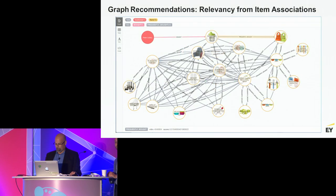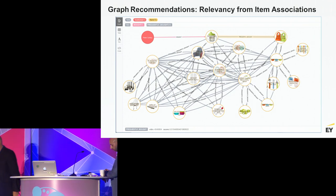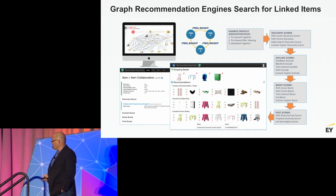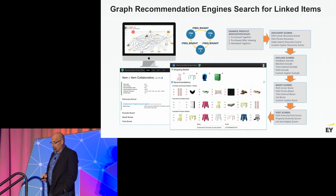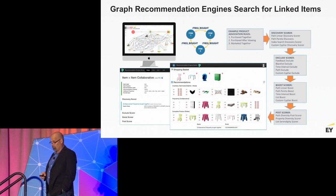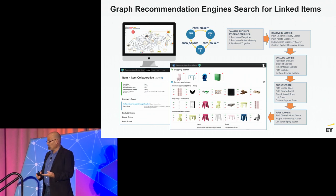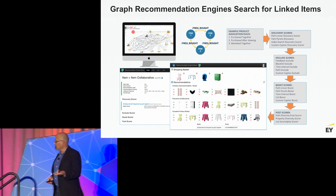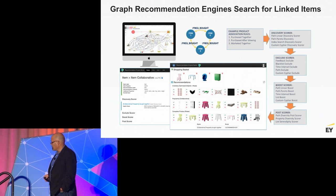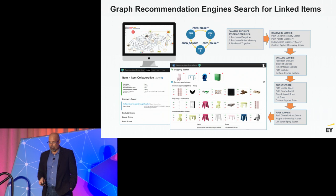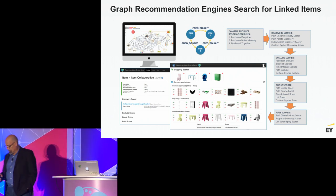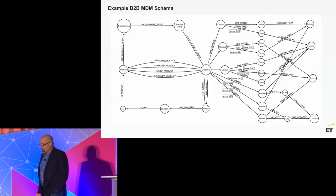In a recommendation engine, the typical steps are: build your data graph, your customer 360 graph, build out all your frequency associations. Amazon credits something like 25% to 35% of their revenue to their recommendation engine, which only has two main relationships: customers who bought this also bought this, and customers who searched for this ended up buying this. Just two relationships and millions of products generating huge value. You then go through discovery scores, exclusions, boosting for marketing, and post-stage checks for category and diversity coverage.